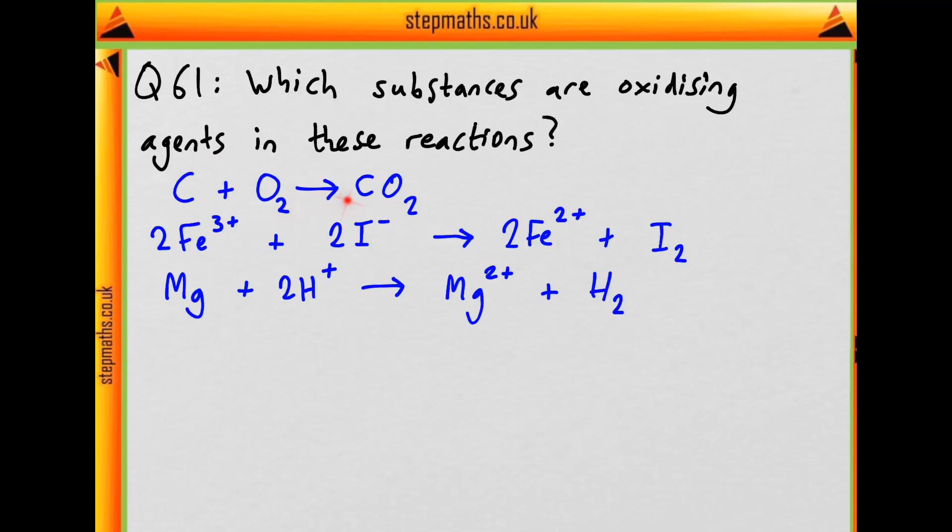We've got carbon and oxygen forming carbon dioxide, iron 3+ and iodide forming iron 2+ and iodine. There's actually a misprint in the question for this one—the 2 coefficient for iron 2+ is missing. Finally, Mg and 2H+ forms Mg2+ and H₂.